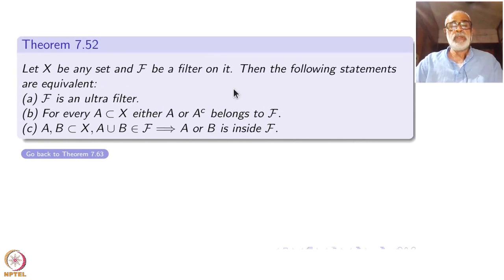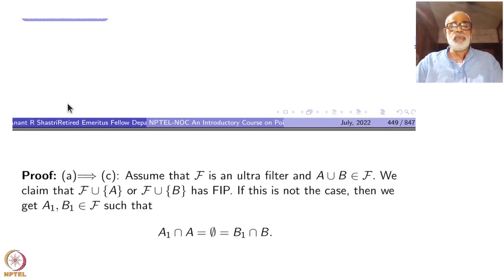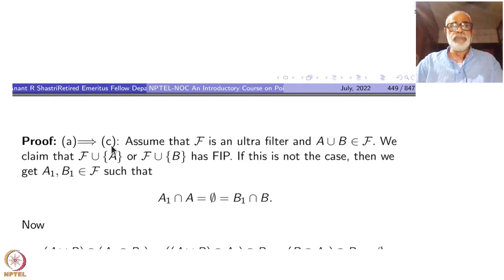For pedagogical reasons I have put statements in the order A, B, C — though perhaps A, C, B would be more natural. An ultrafilter is easy to understand as a maximal element. The proof strategy will be: A implies C, C implies B, and then B implies A. So first assume F is an ultrafilter.